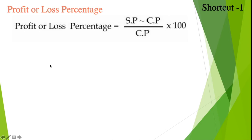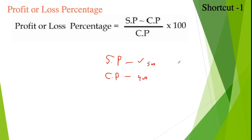First, let us understand what profit or loss is. When a shopkeeper sells any product, the price at which it is sold is known as the selling price. The cost price is how much the shopkeeper or seller originally paid to purchase the product. For example, if a shopkeeper buys a product for 400 and sells it to the customer for 500, in this case the selling price is greater than the cost price.